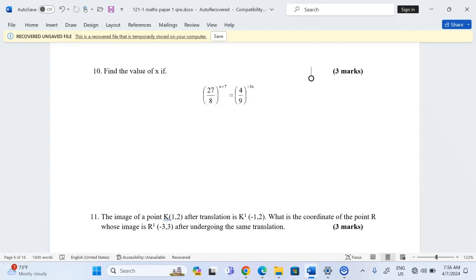We can express 27 in terms of 3 and 8 in terms of 2. And in such a case, you realize 27 is equivalent to 3 power 3 and 8 is equivalent to 2 power 3.